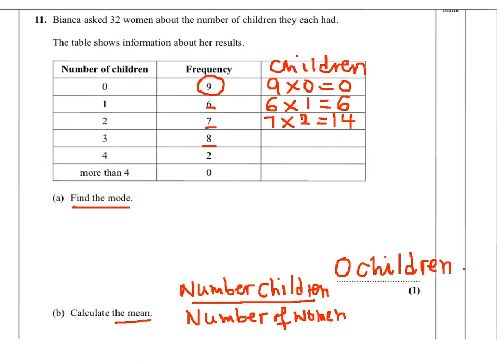8 women with 3 children each, so it's 8 times 3, that is 24. And 2 women with 4 children each, so that's 2 times 4, that gives us a total of 8 children altogether. And there are no women with more than 4 children, so 0 times anything more than 4, so that's 0 children.